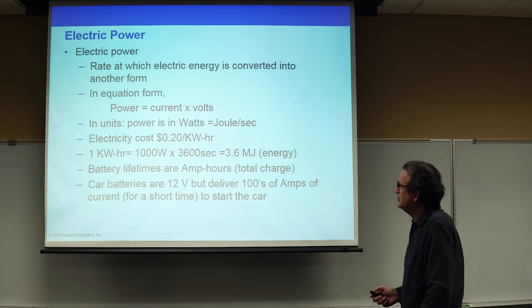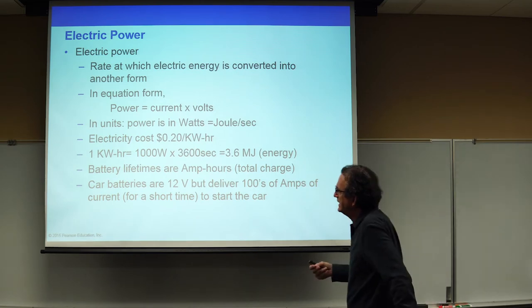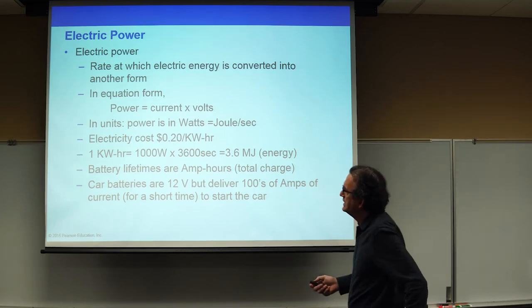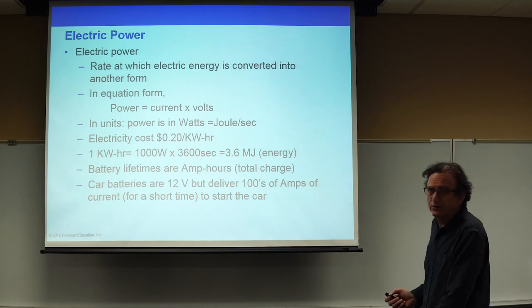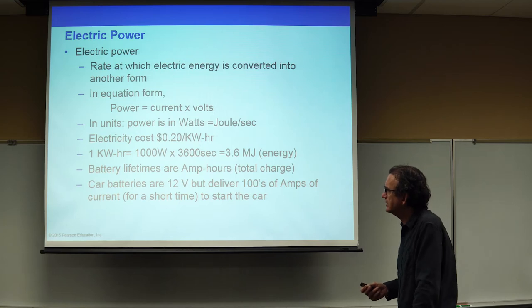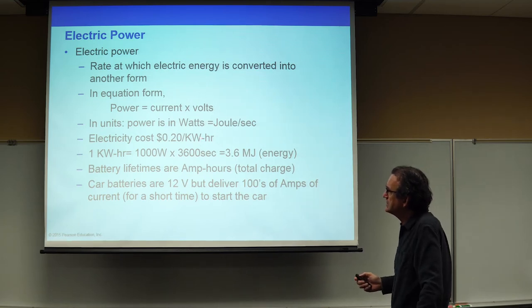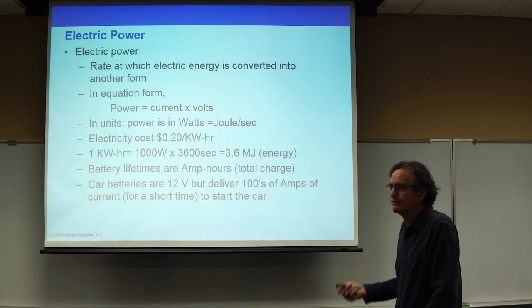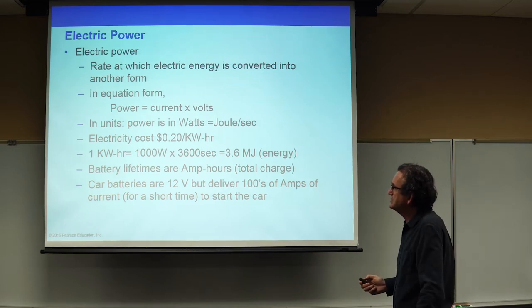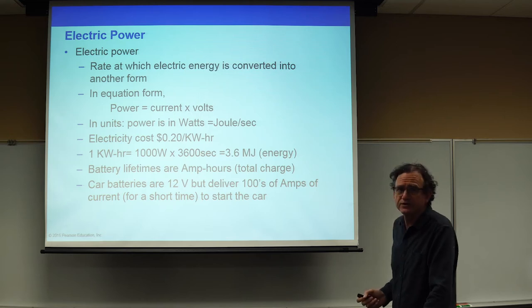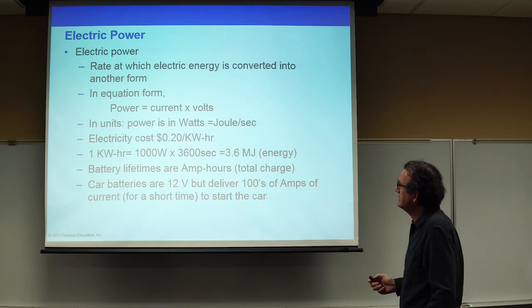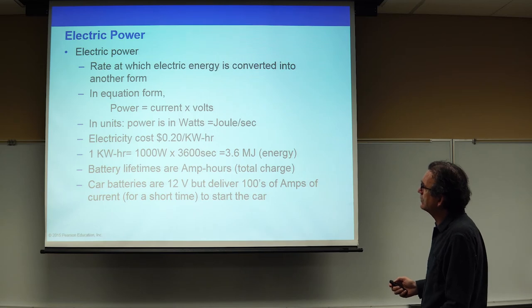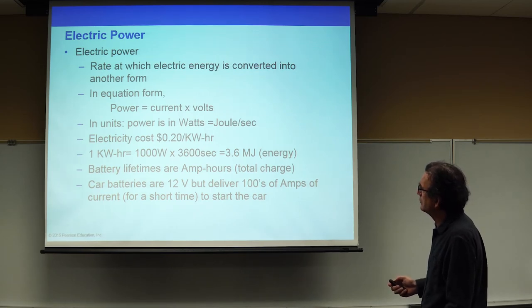What we end up paying for when we use electricity in the home or business is the quantity called the kilowatt hour. A kilowatt hour means that if I am using 1,000 watts continuously for one hour, the electricity company is going to charge me 20 cents for that. So every time I use 1,000 watts for one hour, I will get a bill for 20 cents.